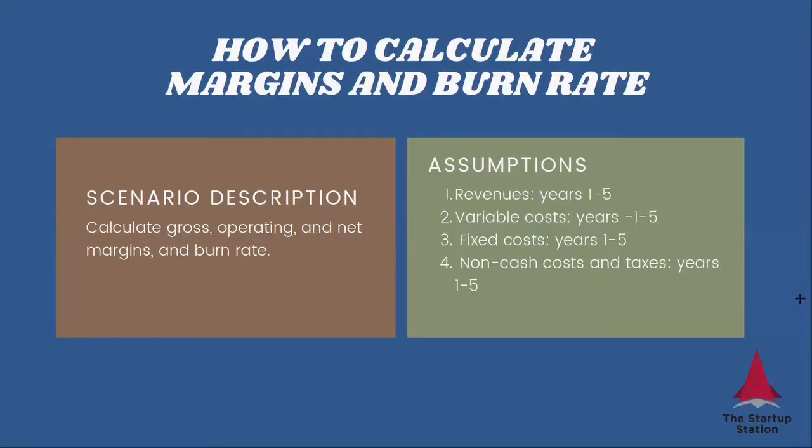What we need to know specifically in order to calculate them are the revenues — if we're building a five-year projection, it will be years one to five — and then we need to know variable costs, fixed costs, as well as non-cash costs and taxes. With all of that, we're going to be able to calculate gross, operating, and net margins, as well as the burn rate.